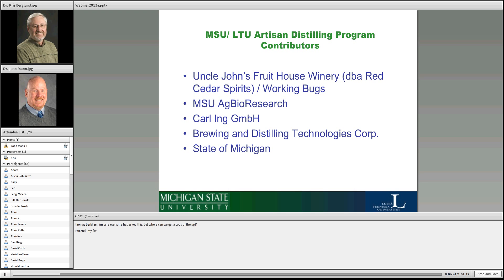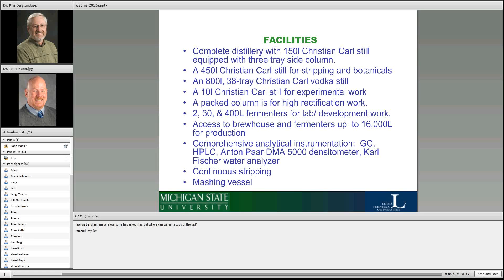We've had a lot of support over the years from AgBioResearch — the new name of the Michigan Agricultural Experiment Station at MSU. We have industrial collaborators: Carl GmbH in Germany and Brewing Distilling Technologies in Pennsylvania. Our facility in East Lansing is actually the largest distillation facility in the state of Michigan for beverage production. We have a 450-liter Christian Carl still, a 450-liter still for stripping and botanicals like gin, and an 800-liter 38-tray column for producing vodka.